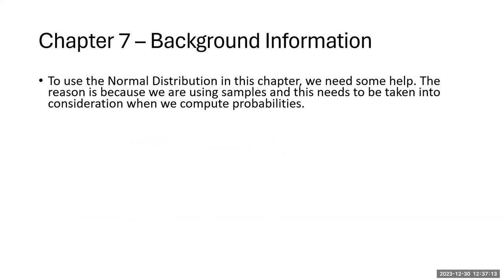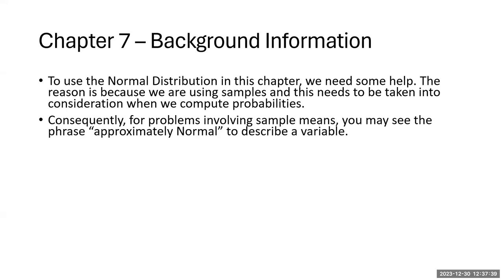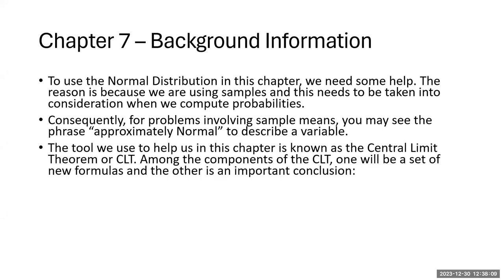We want to use the normal distribution with the sampling distribution, but there's variation to account for — especially when computing probabilities. Sometimes you'll see the phrase 'approximately normal' describing a variable, meaning it follows a bell-shaped symmetric distribution, which allows us to use the normal distribution tables and z-scores. The specific tool that will help us in this chapter is known as the central limit theorem, or CLT, which involves changes to the formulas.